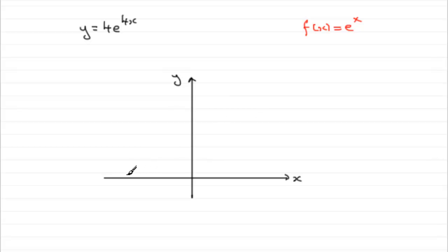It doesn't touch the x-axis, but it approaches it. The x-axis is an asymptote, as we say. Crosses the y-axis at 1 and then goes up something like this.